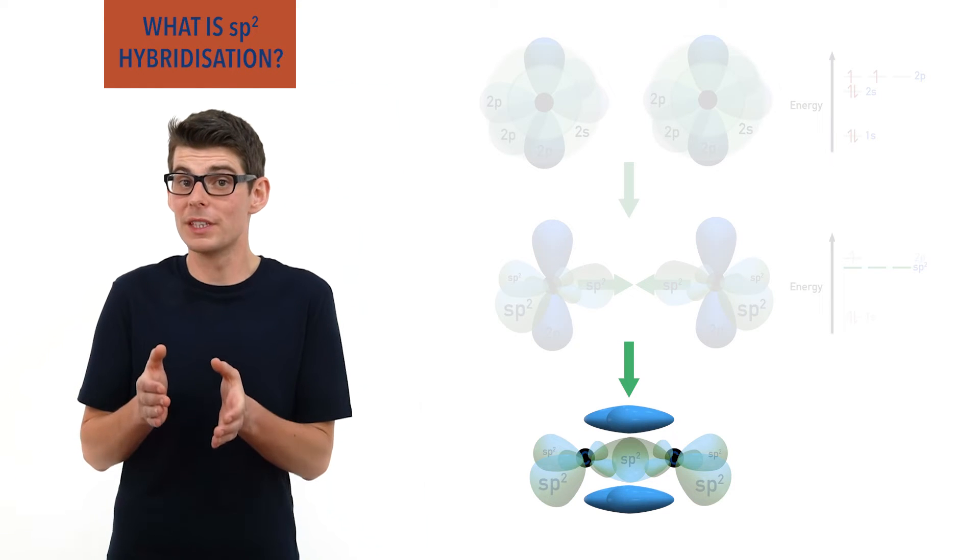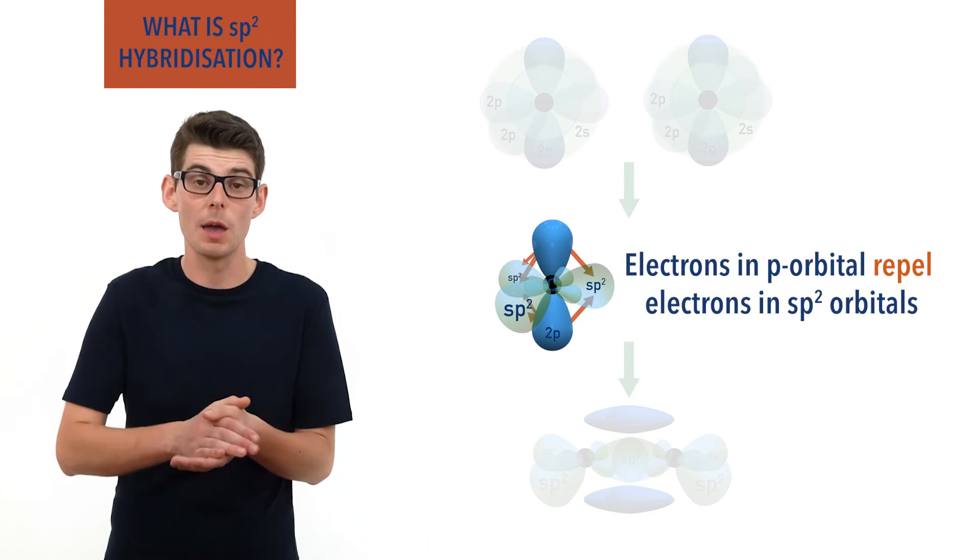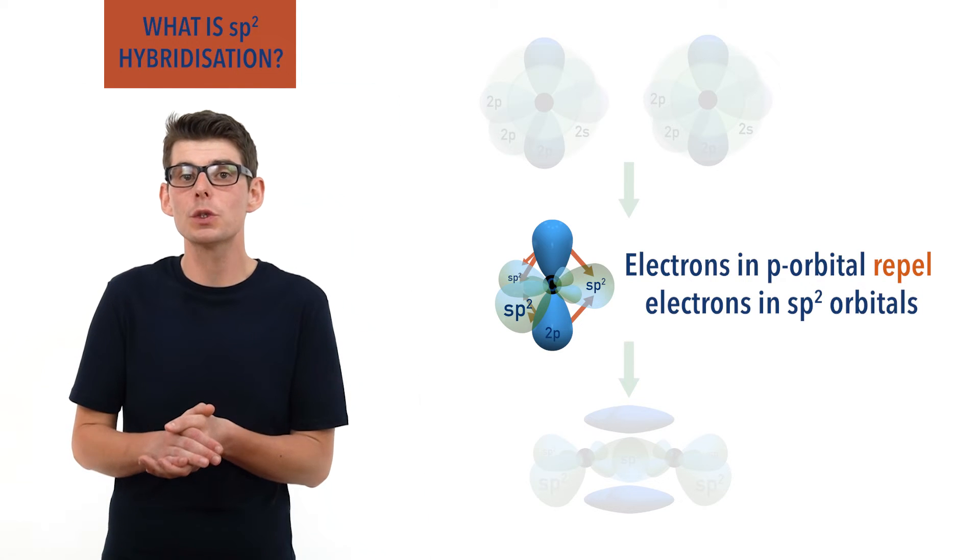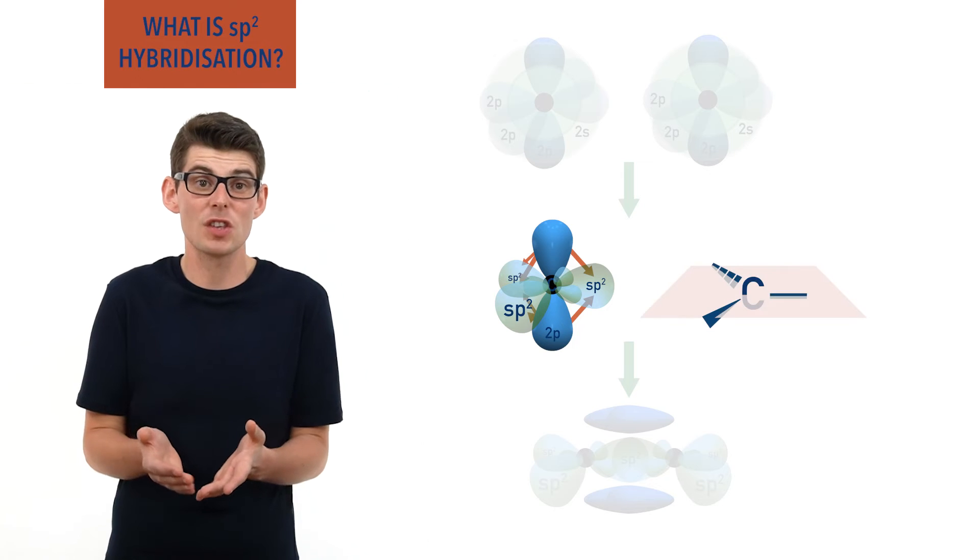Due to the electrons in the p orbitals repelling the electrons in the sp2 hybrid orbitals, the sp2 hybrid orbitals all end up in the same plane, essentially flat.